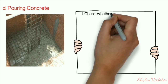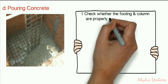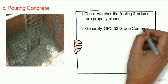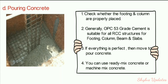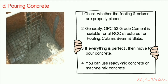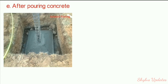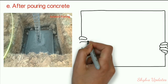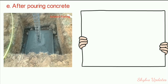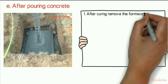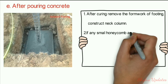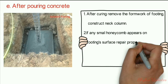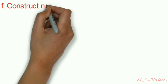Pouring concrete: Check whether the footing and column are properly placed. Generally, OPC 53-grade cement is suitable for all RCC structures including footing, columns, beams, and slabs. Use ready-mixed or machine-mixed concrete. After curing, remove the formwork. If any small honeycomb appears on the footing surface, repair it properly. Before backfilling, construct the neck column.